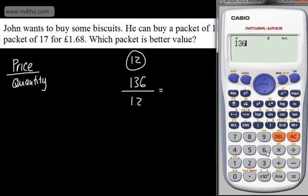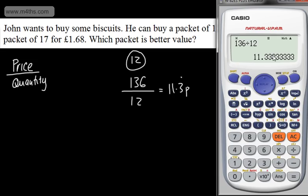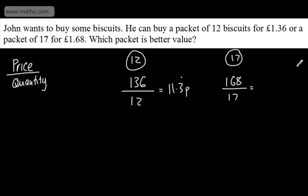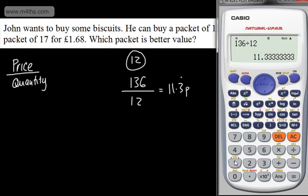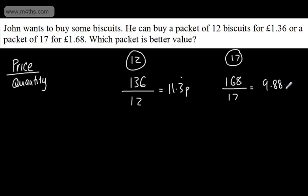So if we do 136 divided by 12, this tells me that each biscuit is going to cost 11.3 recurring pence. It's quite important that you consider these decimal places. Often students just see 11.3 and leave it there. With some best buys the actual value will be very similar. So do keep a high level of accuracy. If we now do the other one 168 divided by 17, that's going to give me on here now 9.88. So this is going to be now 9.88 pence. And I'm just going to round this now to two decimal places.